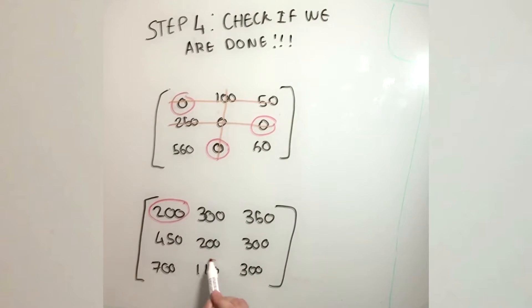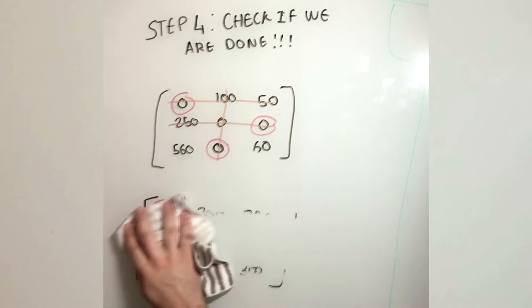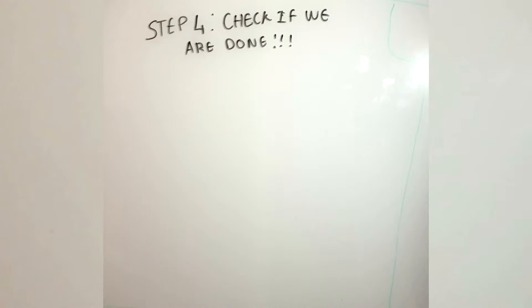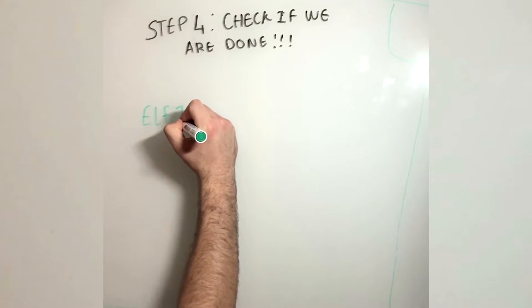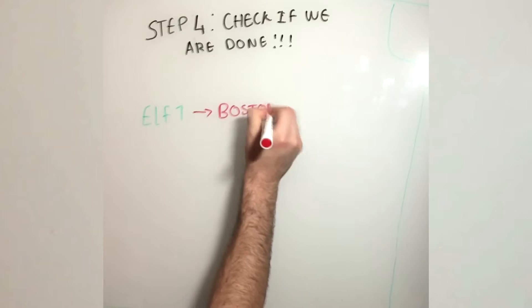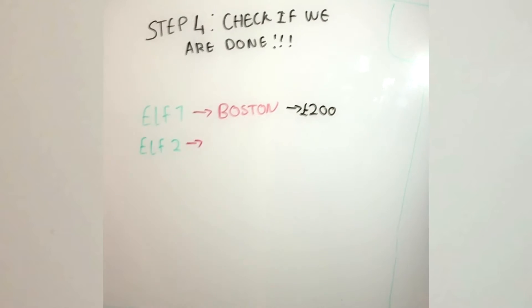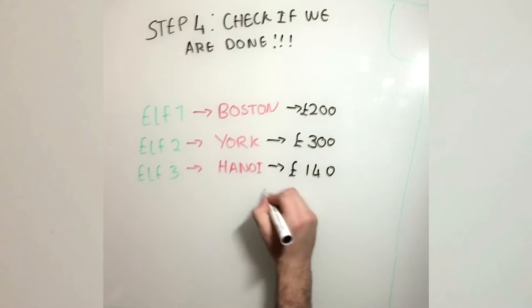So the selected zeros from the matrix we worked on is then mapped onto the matrix with the prices. This gives us the solution to the assignment problem. So to summarize, elf 1 will be traveling to Boston, elf 2 will be traveling to York, elf 3 will be traveling to Hanoi, giving us a total price of 640.